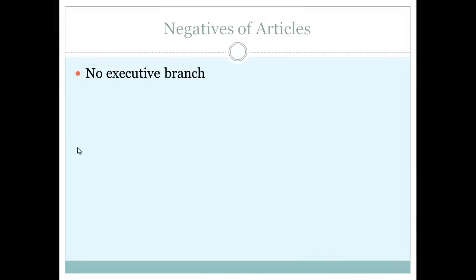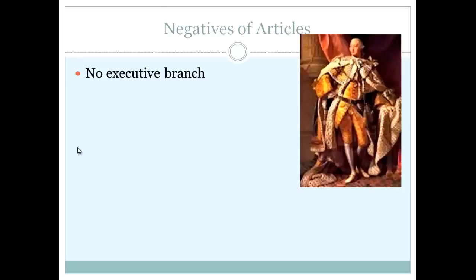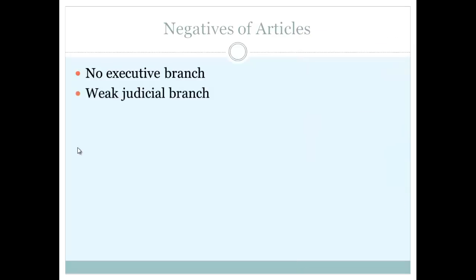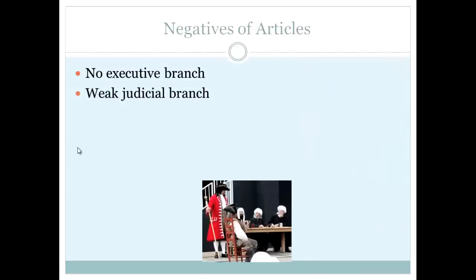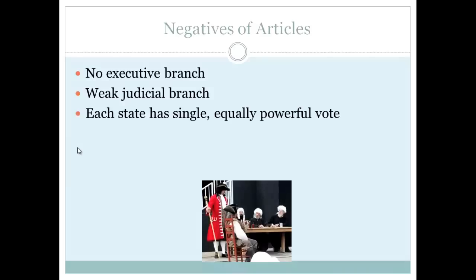First negative: there's no executive branch. A lot of people were wary of one person having a lot of power — think King George III. So when the Articles were developed, they purposely did not include an executive branch. There was also a very weak judicial branch, because colonists remembered the Admiralty Courts from Colonial America and were very wary of courts, so they purposely designed a weak judicial branch.